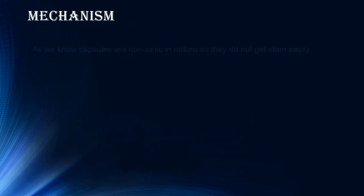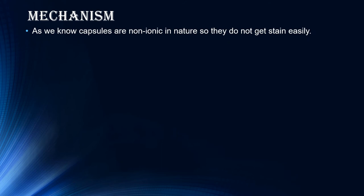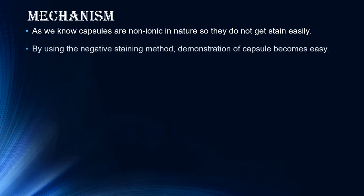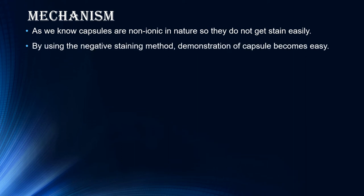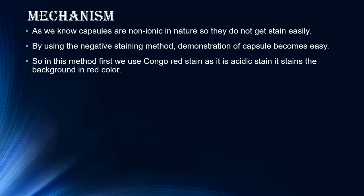Let's see the mechanism. Capsules are non-ionic in nature, so they do not get stained easily — they do not have any charge on their surface. By using negative staining method, demonstration of capsule becomes easy. In this method, first we use Congo red stain. As it is an acidic stain, it stains the background in red color.